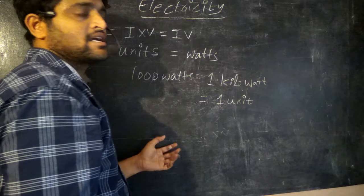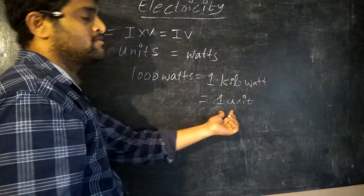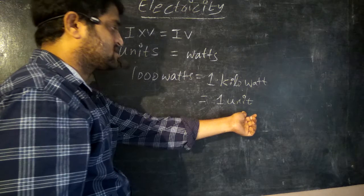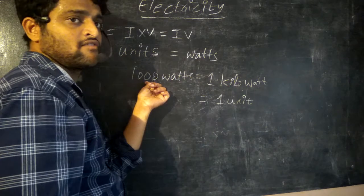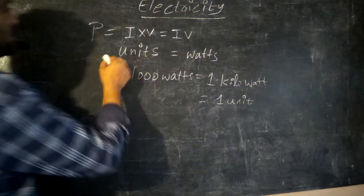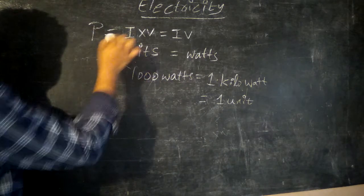So these terms will be considered for calculating the usage of electricity. One kilowatt is nothing but one unit. So everyone will get an electricity bill. Electricity bill is calculated for units. One unit equals one kilowatt, equals thousand watts. This is the expression for power.